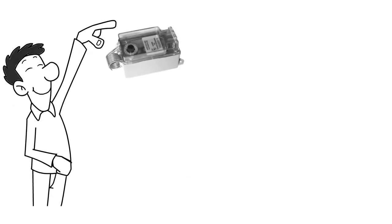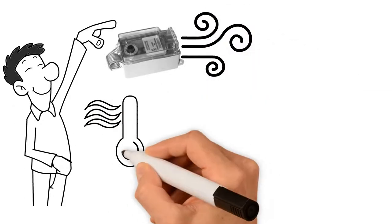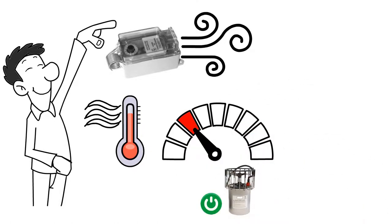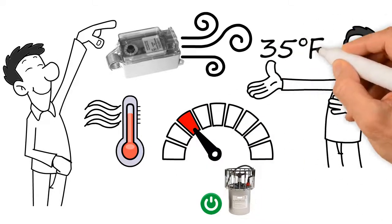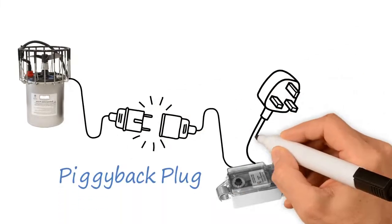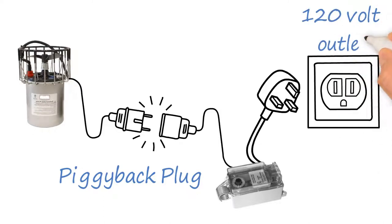Mount the thermostat controller near the body of water to sense the air temperature. Set the temperature for when you want the de-icer to turn on. We recommend 35 degrees Fahrenheit. Plug the de-icer into the thermostat's piggyback plug, and plug the cord into a grounded 120-volt outlet.